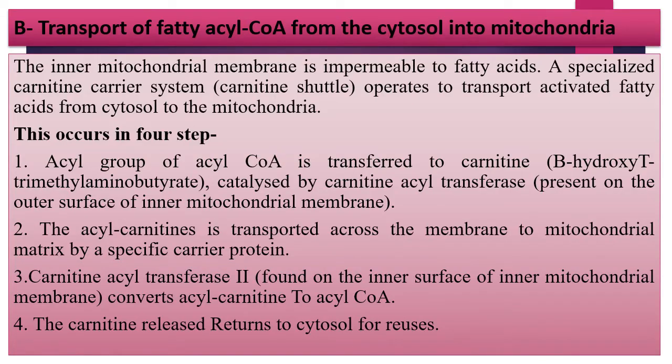Step 2: Transport of fatty acyl-CoA from the cytosol into the mitochondria. The inner mitochondrial membrane is impermeable to fatty acids. A specialized carnitine carrier system, also known as the carnitine shuttle, operates to transport activated fatty acid from cytosol to mitochondria. This process occurs in four steps: Step 1, acyl group of acyl-CoA is transferred to carnitine; Step 2, acyl-carnitine is transported across the membrane to the mitochondrial matrix; Step 3, carnitine acyl-transferase II converts acyl-carnitine to acyl-CoA; and lastly, the carnitine released returns to the cytosol for reuse.